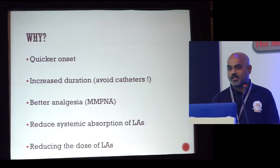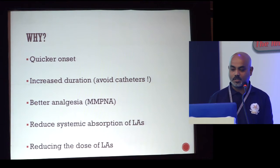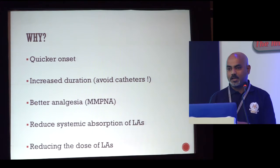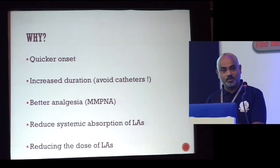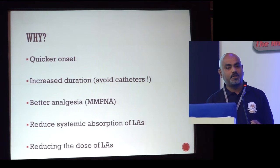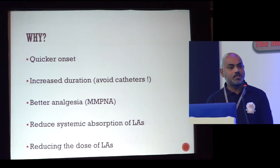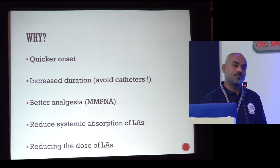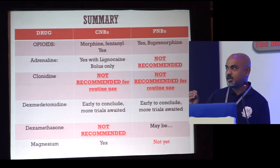So why do we take cocktails in regional anaesthesia? We all want quicker onset, increased duration, and to avoid catheters. There is a new terminology called MMPNA — multimodal perineural analgesia. There are so many different kinds of receptors in the body that you try to target many receptors so that you can reduce the quantity of each individual drug or improve the quality of the block, increase the duration, reduce systemic absorption of local anaesthetic, and avoid reaching toxic thresholds.